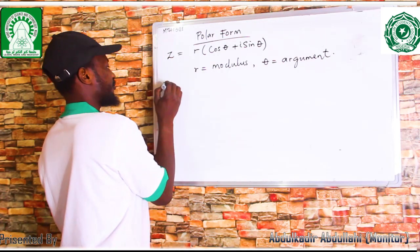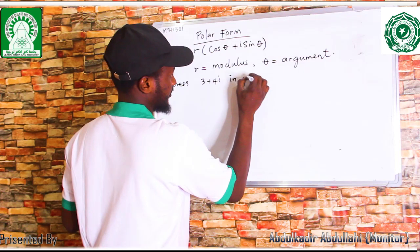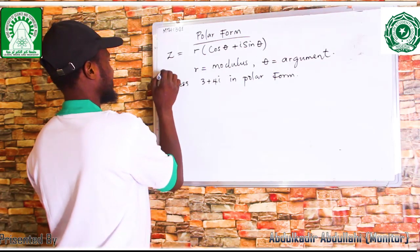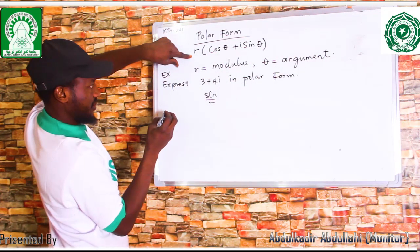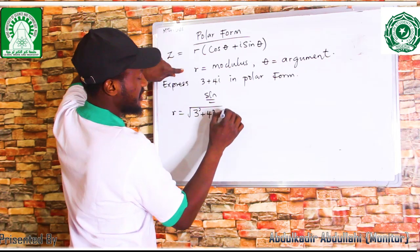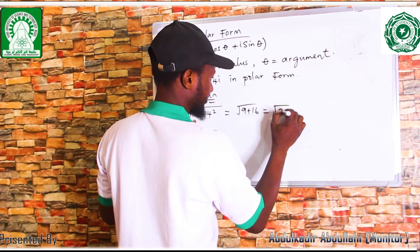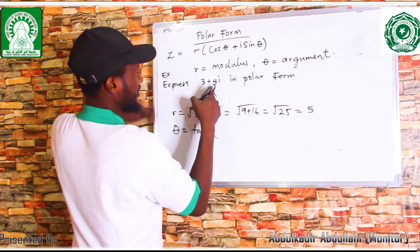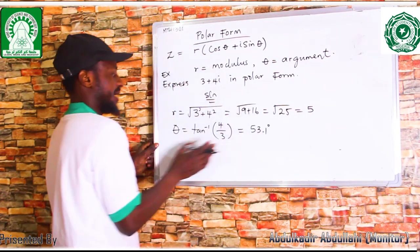If we are to express 3 + 4i in polar form, what's needed is r and theta. We find r: r is equal to the square root of 3 squared plus 4 squared, which equals root of 9 plus 16, which is root of 25, which equals 5. And theta is equal to tan inverse of 4 over 3, which is the same as 53.1 degrees.